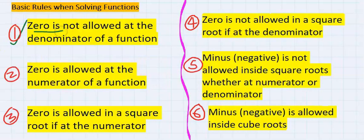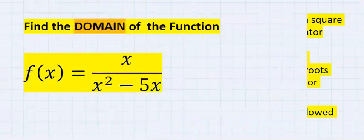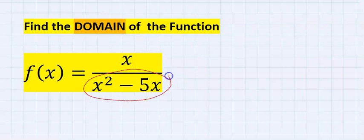Zero is not allowed at the denominator of a function, however zero is allowed at the numerator. With this basic rule in mind, we are going to solve for only the denominator.